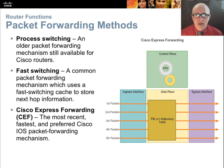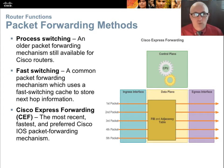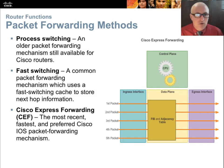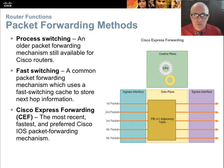We have several packet forwarding methods, and the main difference is speed or performance. Process switching is an old-fashioned way of routing — it uses the CPU and is processor intensive, so it's slow, but it's available on all routers. Then we have fast switching, which stores previously used routes in a cache to speed up routing. If you've been to a destination recently, it can grab that route and use it again without having to process what the best path is.